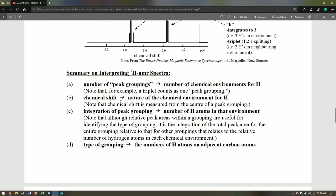To summarize, the number of peak groupings indicate the number of chemical environments for H. The chemical shift of the peak grouping indicates the nature of the chemical environment. The integration of the peak grouping shows the number of H atoms in that particular environment. And the type of grouping indicates the number of H atoms on adjacent carbon atoms.